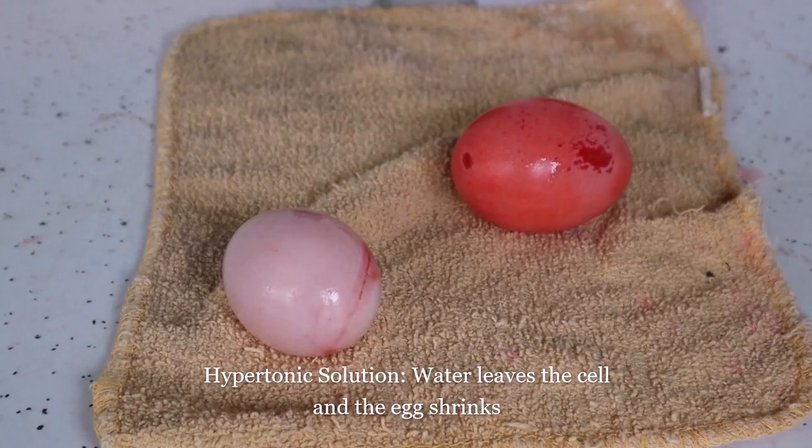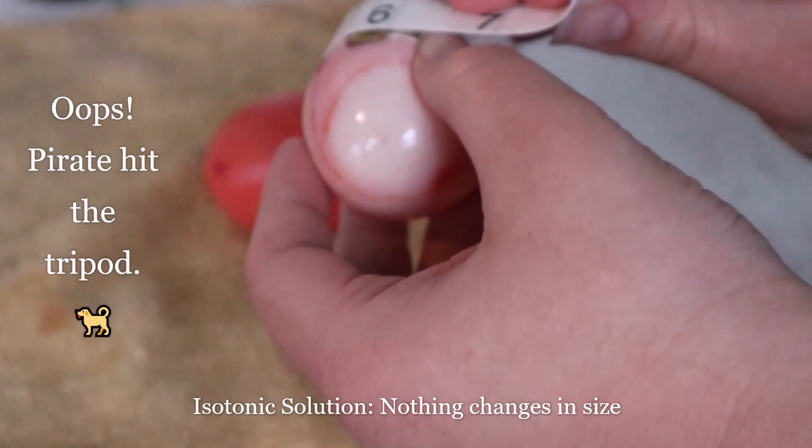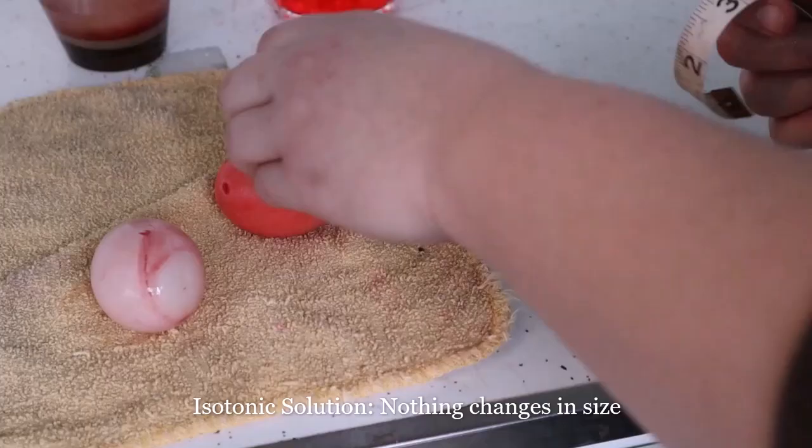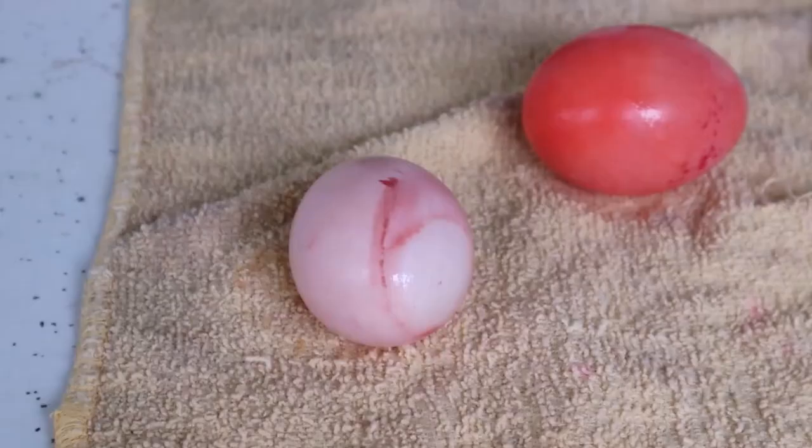However, if water left the cell and the egg shrank, then the egg was in a hypertonic solution. And if nothing changed in the size of your egg, then you placed it into what is called an isotonic solution.